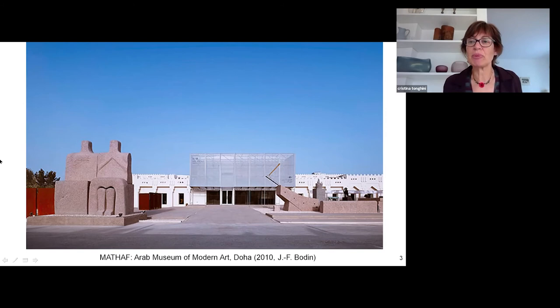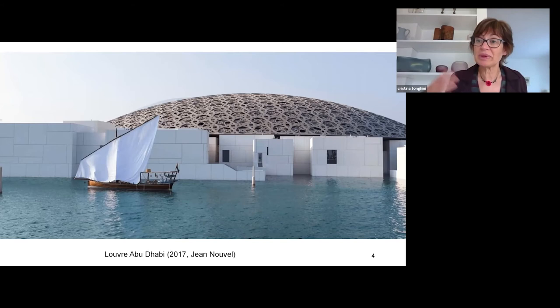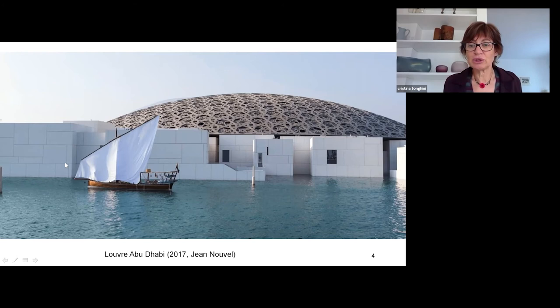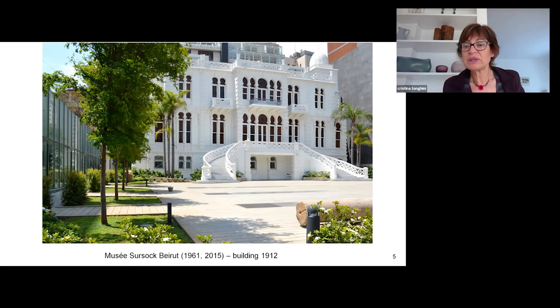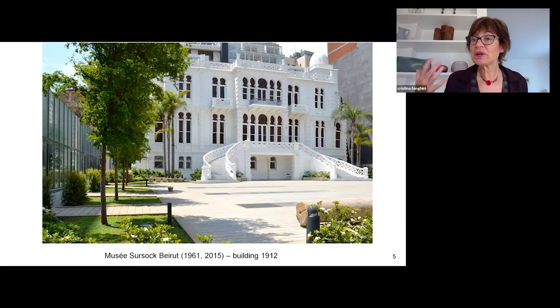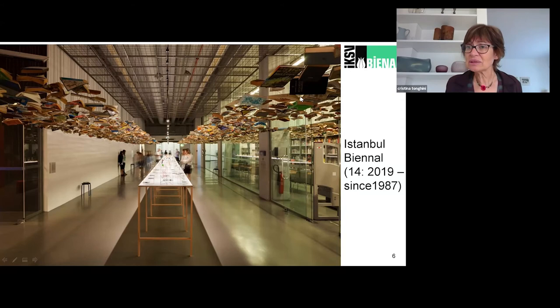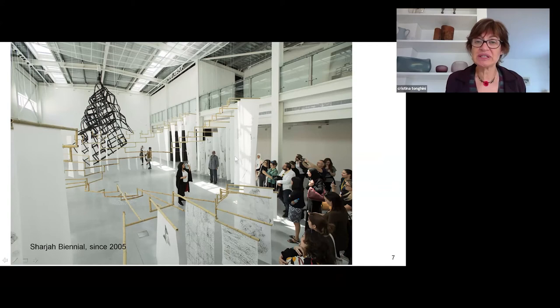Or again, the Louvre Abu Dhabi — many European institutions opened a local branch in the MENA region. The Louvre Abu Dhabi opened in 2017 and is designed by Jean Nouvel. Or museums that reopened with a new mission, like the Musée Sursock in Beirut, that was already opened in 1961. It's located in a historical building of Beirut and reopened in 2015 with an orientation towards modern and contemporary art of the area. Not only museums, but also biennials were established, like the Istanbul Biennial that started in 1987, or the Sharjah Biennial. Sharjah is in the United Arab Emirates and opened in 2005. Or the Dubai Art Fair, which has become one of the most important scenes for the art of the MENA regions, and it takes place annually since 2007. Many galleries worldwide participate in this event.